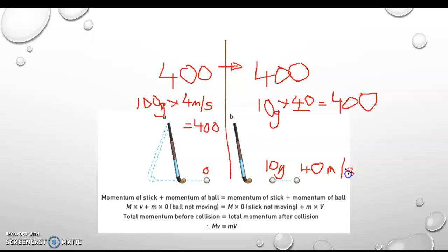So the ball is going 10 times faster than what my stick was going. The reason why it's going faster is because it has a much smaller mass, and we know that momentum equals mass times velocity. So if the mass is a lot smaller, therefore the velocity of that object is a lot quicker. Hopefully that makes a little bit of sense. Happy to give another example if needed.